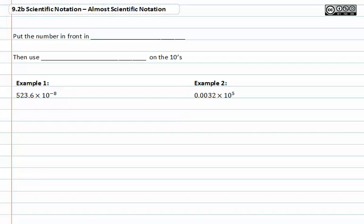As you may recall, scientific notation is in the form a times ten to the b, where a has to be between one and ten.